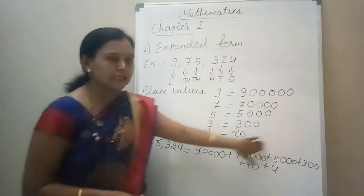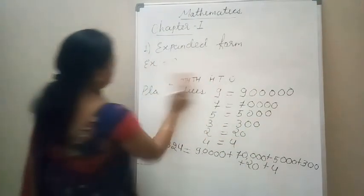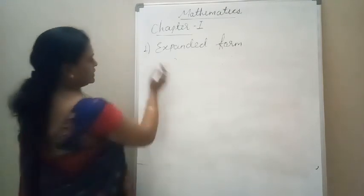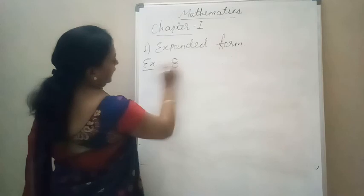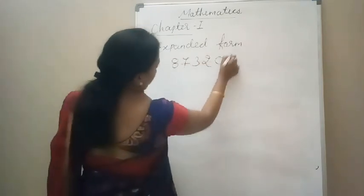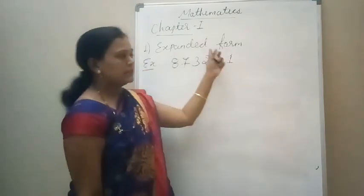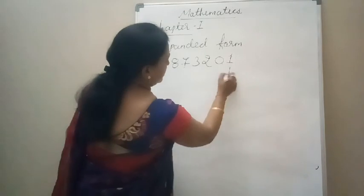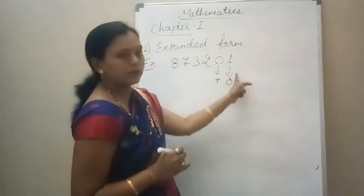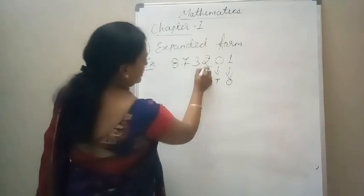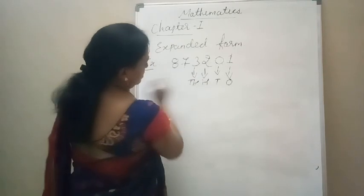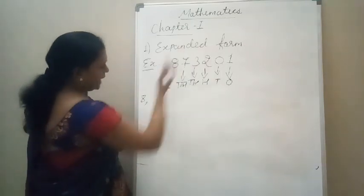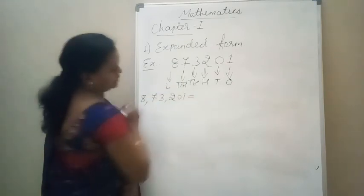Let's take one more example. The number is 8,73,201. In the previous example, there was no zero. But in this second example, there is a zero. For the expanded form, step one: we will identify the places of each digit — ones, tens, hundreds, thousands, ten-thousands, and lakhs. Now, write down this number 8,73,201 in expanded form.